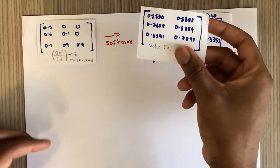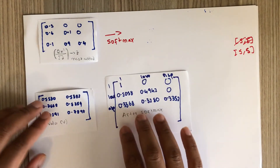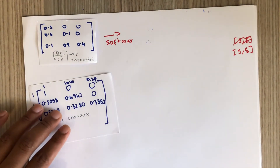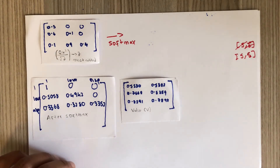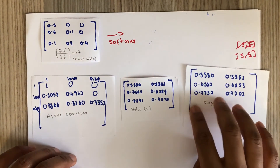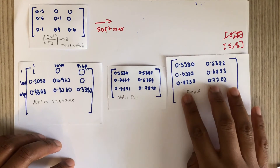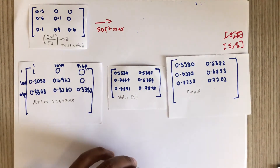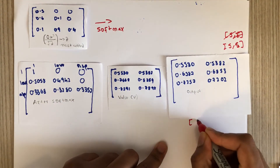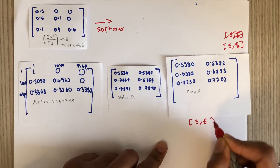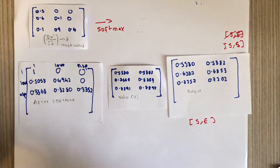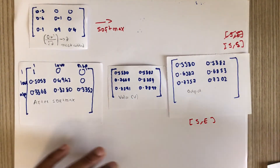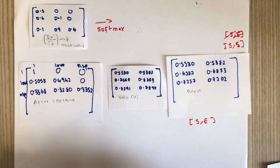Finally, we multiply the softmax output by V. The result has dimension S by E, which is the same as the input dimension. We can then take this and pass it into further layers, such as a fully connected layer, for further processing.